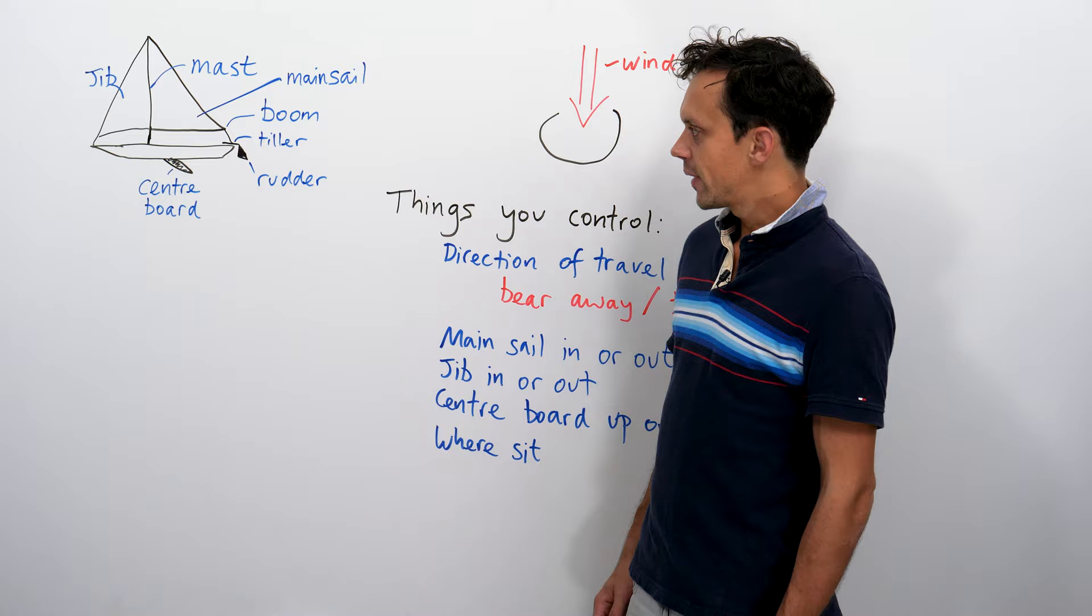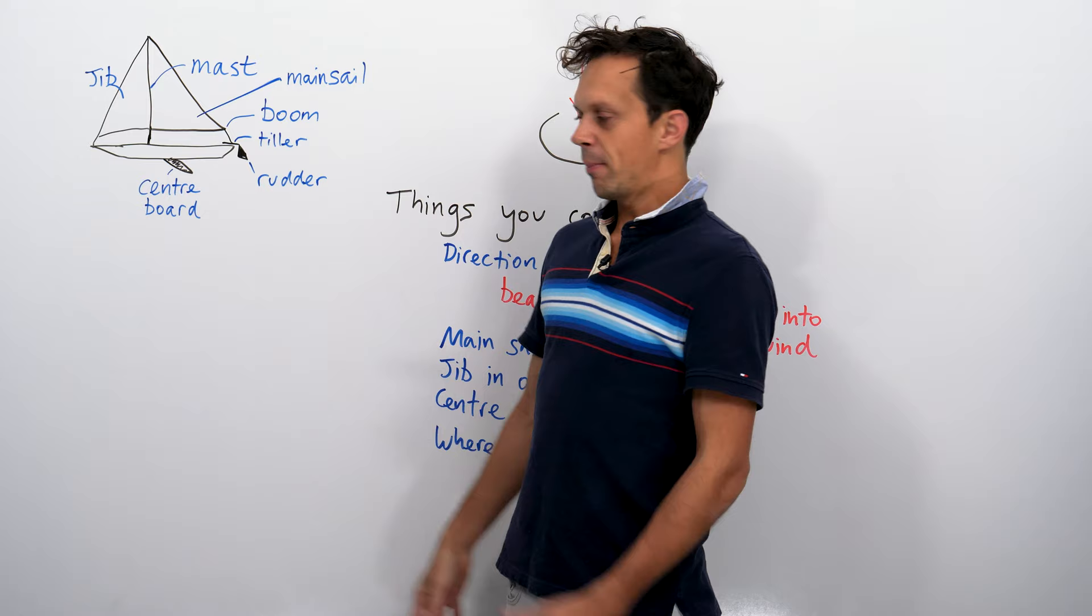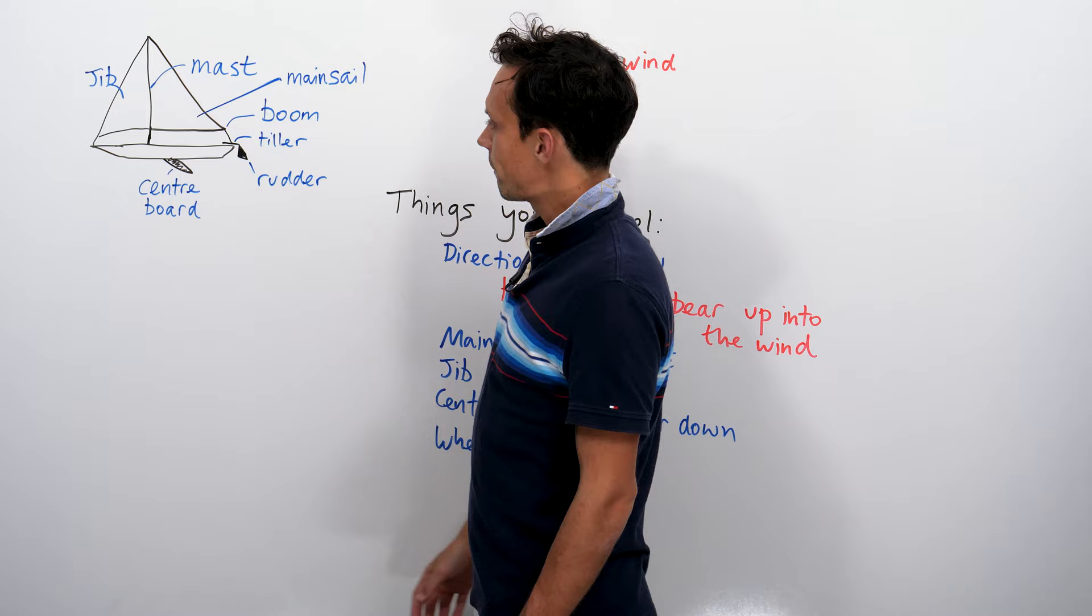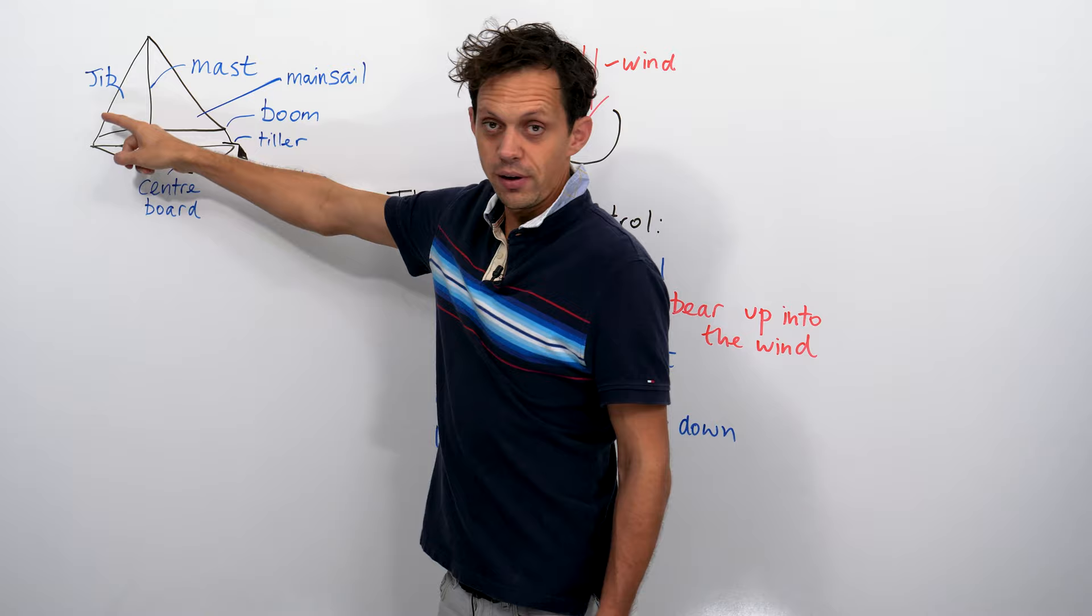Now, I first did this standing in front of a whiteboard talking about boats when I was about seven or eight years old, so it feels quite weird to be doing it for YouTube. Here we go. So, this is a boat. There are two sails.